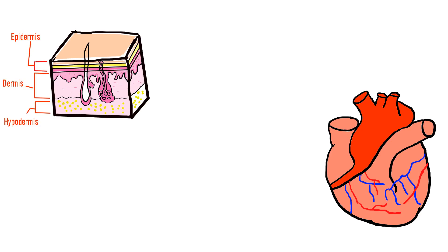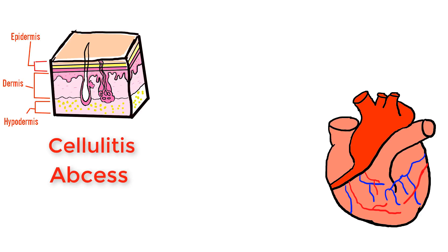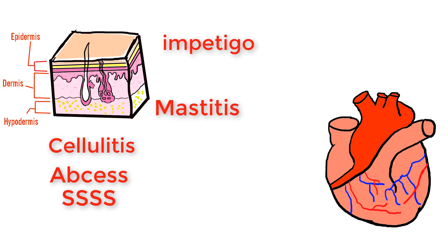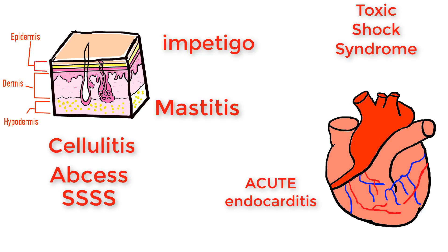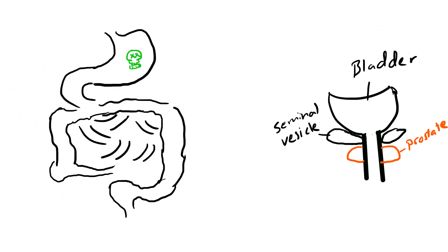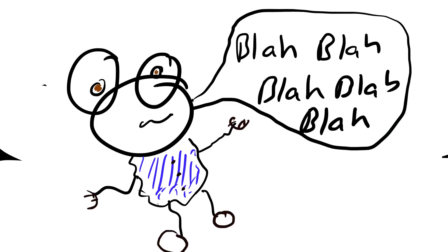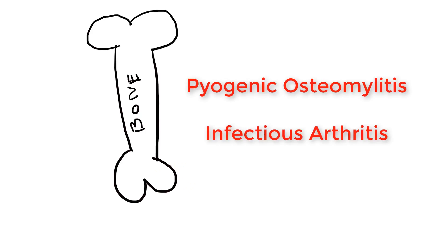Staph aureus affects a whole bunch of organ systems. In the dermis, it can cause cellulitis, abscesses, scalded skin syndrome, impetigo, and mastitis. It can affect the cardiovascular system, causing toxic shock syndrome and acute endocarditis — specifically acute, not subacute endocarditis, which is Staph epidermidis. It can affect the GI system through toxin-mediated foodborne illness. It can also cause prostatitis, typical pneumonia, pyogenic osteomyelitis, and is the second most common cause of infectious arthritis in older kids and adults.